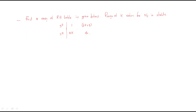Hello everyone. In this session we will discuss problems regarding the Routh-Hurwitz criteria. The problem is: the first two rows of the RH table are given — s-cube and s-square rows. We need to find the range of k values for which the system is stable. Since the first two rows of the Routh table are given, we will extend the remaining table with s-power-1 and s-power-0 rows.